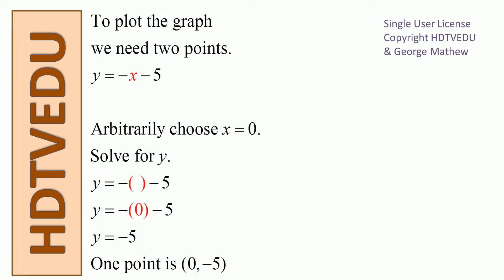To plot the graph we need two points. If you know something is a straight line, we only need two points to draw the graph. How do you know it is a straight line? This is a linear equation in x, so we expect it to be a straight line with constant slope. To plot the graph we need two points.